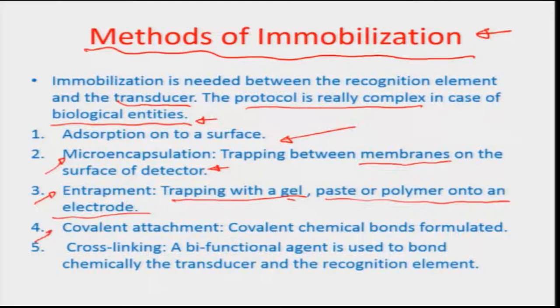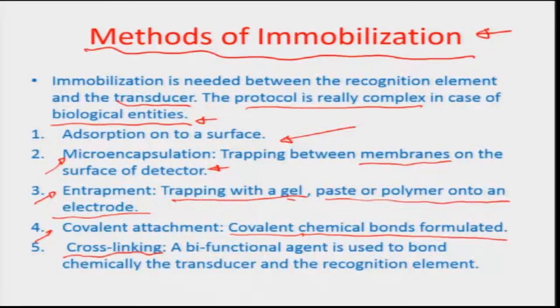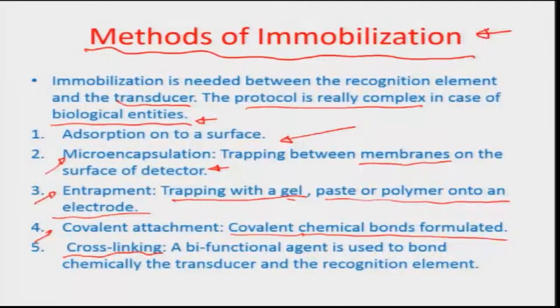You can do the covalent attachment of the recognition element — chemical bonds are formulated between the recognition element and the transducer surface. You can also do cross-linking, where a bifunctional linker molecule connects on one side to the transducer and on the other side to the recognition element, holding it close to the transducer surface. There are a variety of such immobilization methods used for designing the process of overlaying the recognition element onto the transducer.